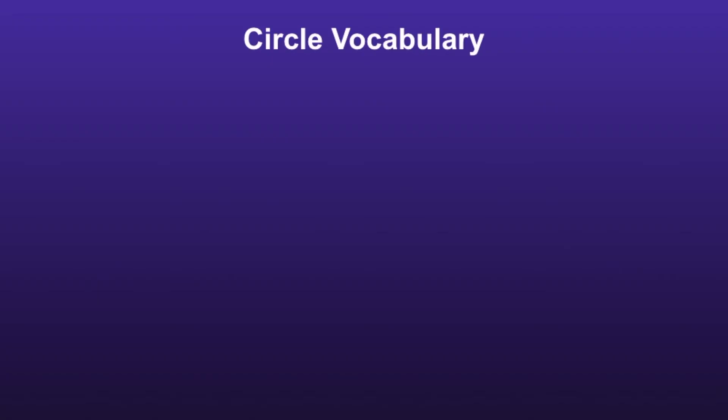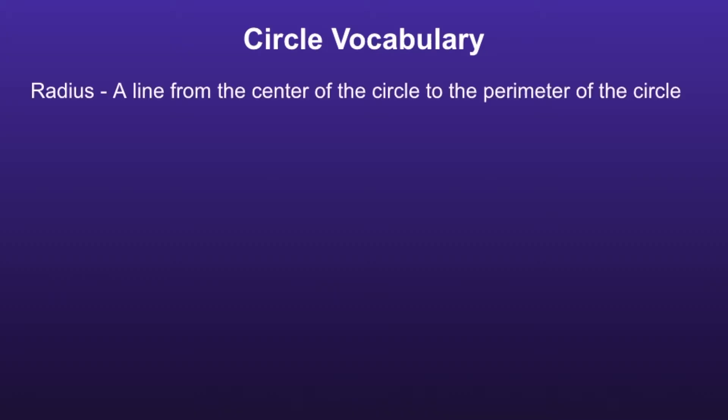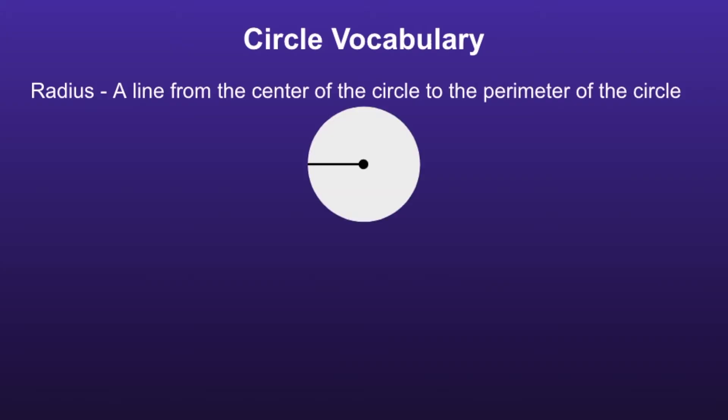Circle Vocabulary. Radius: a radius is a line from the center of the circle to the perimeter of a circle, or I like to think of it as halfway across the circle.